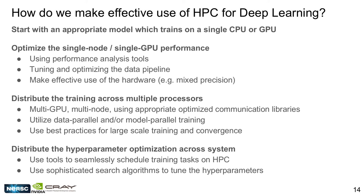We'll first talk about optimizing performance on a single GPU using profiling tools, tuning and optimizing the data pipeline, and making effective use of hardware with mixed precision. Once you have a handle on single-node performance, you can distribute training across multiple GPUs and nodes using the right communication libraries. We'll focus on data parallelism — the more common case — rather than model parallelism. Mustafa will cover best practices for large-scale training and convergence. Then we'll show how to leverage large-scale systems with distributed hyperparameter optimization using tools like CrayHPO, which works seamlessly with HPC schedulers and uses sophisticated search algorithms.